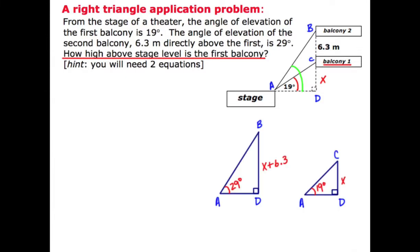So at this time I've redrawn the two right triangles. The smaller of the two, triangle ACD, has an angle of elevation of 19 and an opposite side of X.